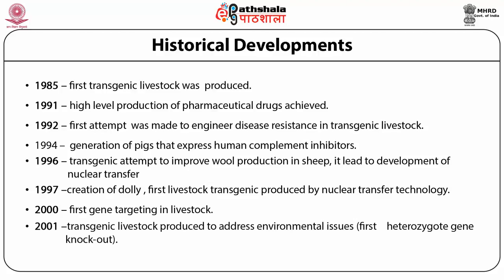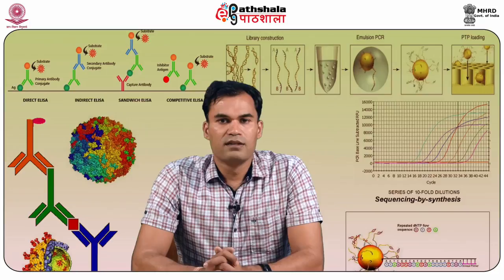In 2001, transgenic livestock were produced to address environmental issues. In this case, the first heterozygote gene knockout was done. In 2003, the first homozygote gene knockout was done in livestock.